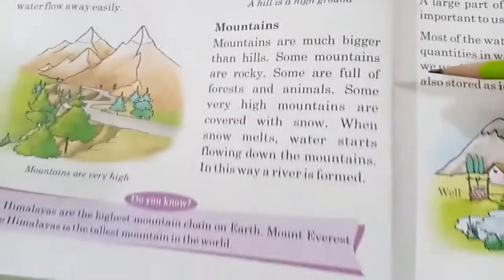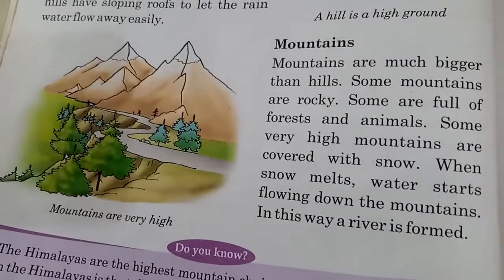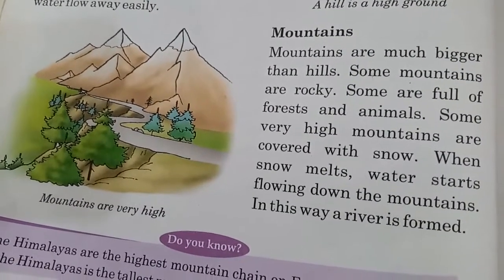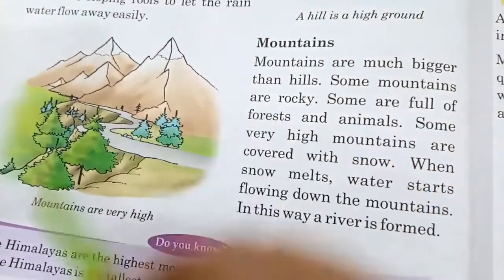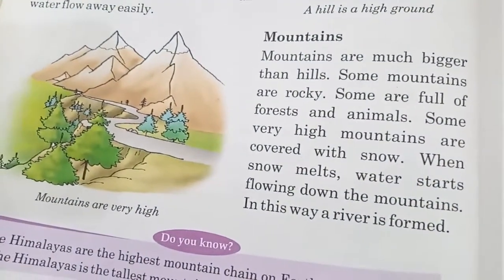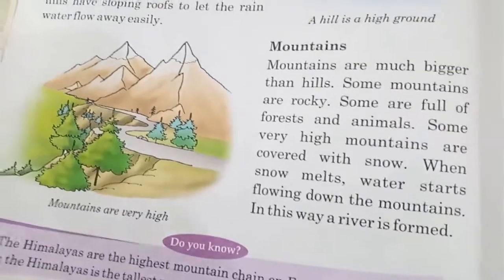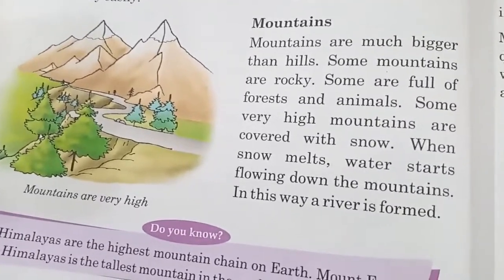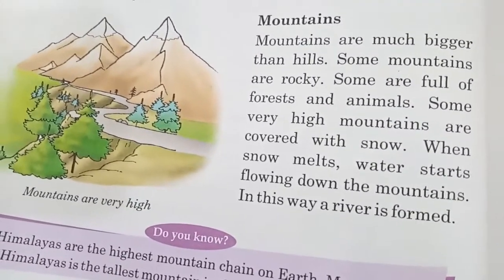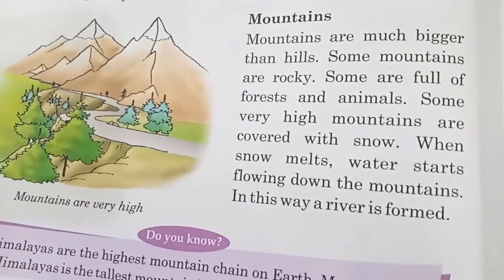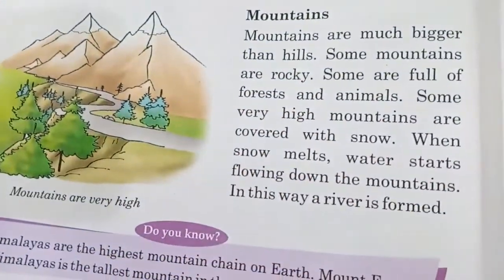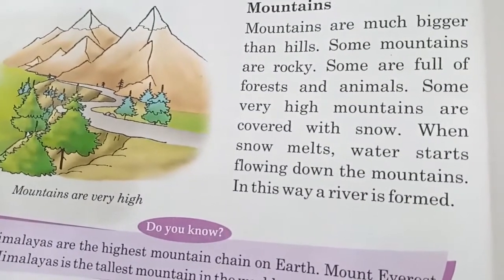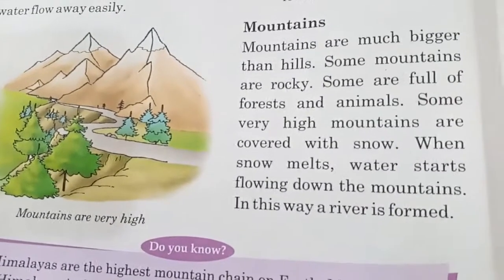Mountains are much higher than hills. Different types of mountains are there — some are rocky and some are green. Green mountains have forests and animals. Very high mountains are covered with snow. When the snow melts, water starts flowing down the mountains and a river is formed.